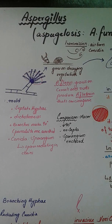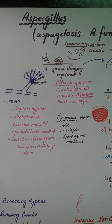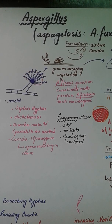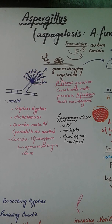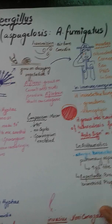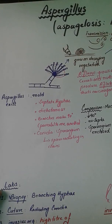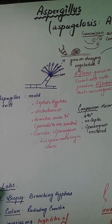Aspergillus is an opportunistic fungus, meaning that whenever it has the opportunity to enter your body it will cause destruction. The disease it causes is called aspergillosis. The organism in the genus Aspergillus we are going to study today is Aspergillus fumigatus, which exists in the form of mold.